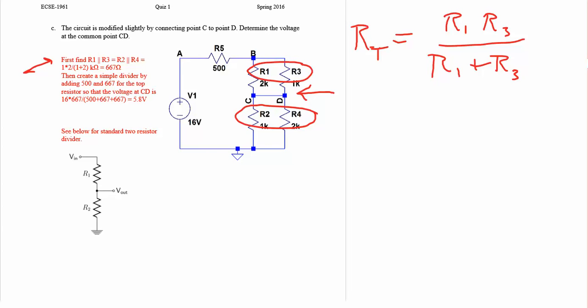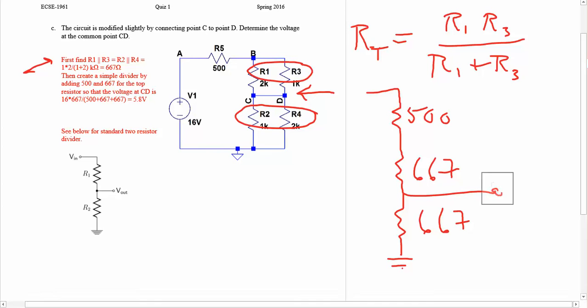So now we can redraw the circuit so it looks like this. It's grounded. This is 500, this is 667, and this is 667. We're asked for what the voltage is at the common point CD, which is right there. So what is the obvious next step?